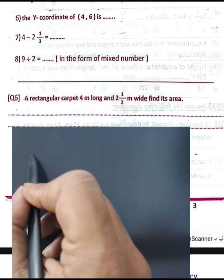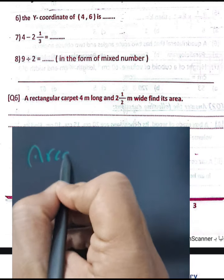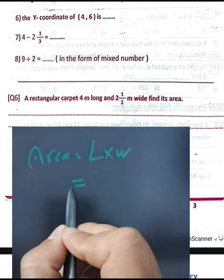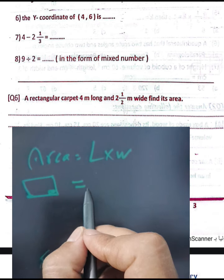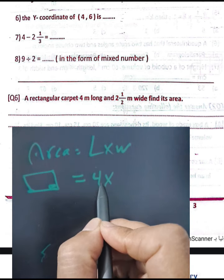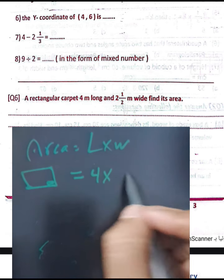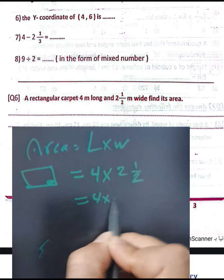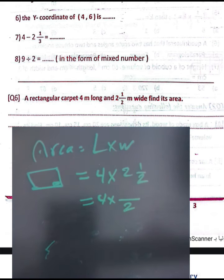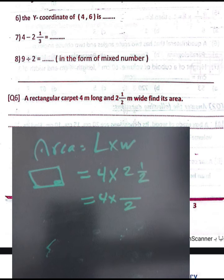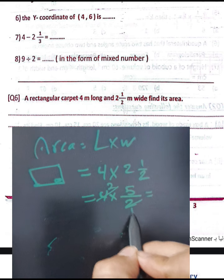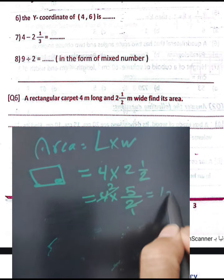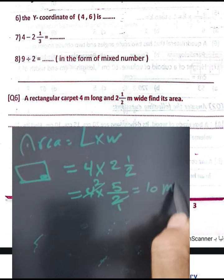Question number six: a rectangular carpet is 4 meters long and two and a half meters wide. Find the area. Area equals length times width: 4 times two and a half. Convert two and a half to an improper fraction: two times 2 equals 4, plus 1 equals 5, over 2 — giving five-halves. Then 4 times five-halves equals twenty-halves equals 10. The area is 10 square meters.